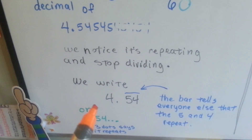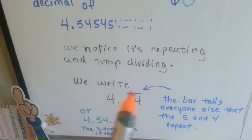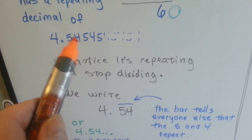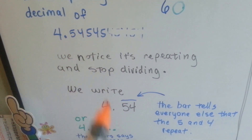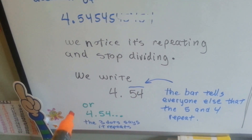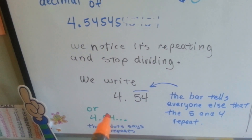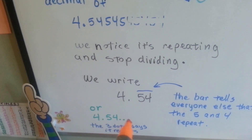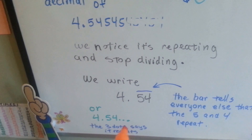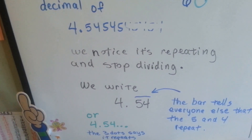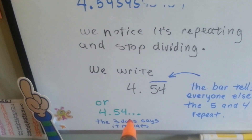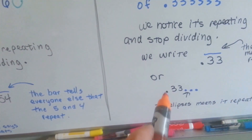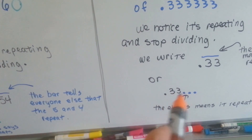So what we do is we write 4 and 54 hundredths with a bar over the top of it. This bar tells everyone that it's going to keep repeating 5, 4, 5, 4. Another way to do it is to use an ellipsis of 3 dots — I use them all the time in my writing. You use an ellipsis, which means 'and so on.' I find using the ellipsis is a little confusing when the decimal is by itself because then it looks like this with the points on each side.